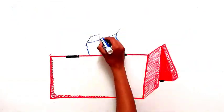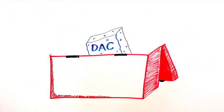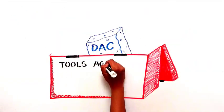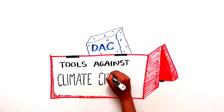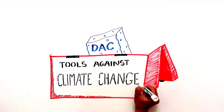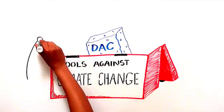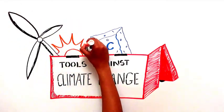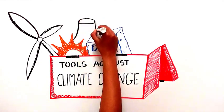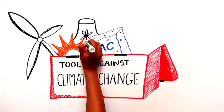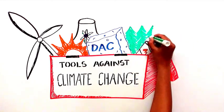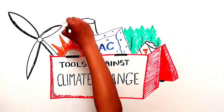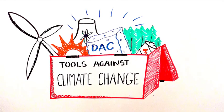However, it's important to remember that direct air capture is just one of the many tools we have to fight climate change. Direct air capture can help us offset carbon emissions from certain hard-to-decarbonize sectors, like aviation. But it is vitally important that we continue to move towards renewable energy as quickly as possible, wherever it is possible. Direct air capture is not the one and only solution to the climate crisis, but it is a technology that we can't afford to overlook.